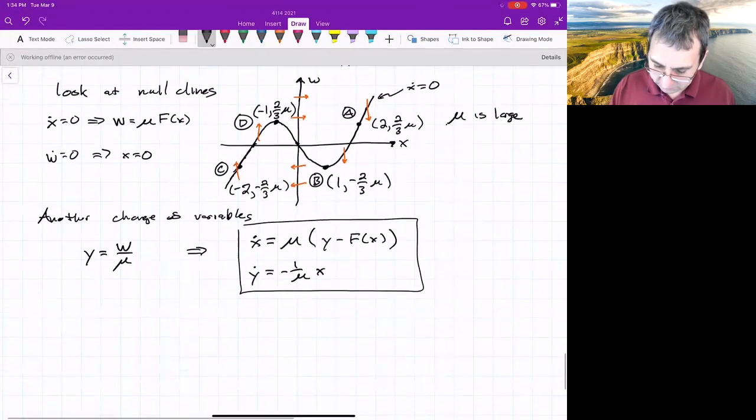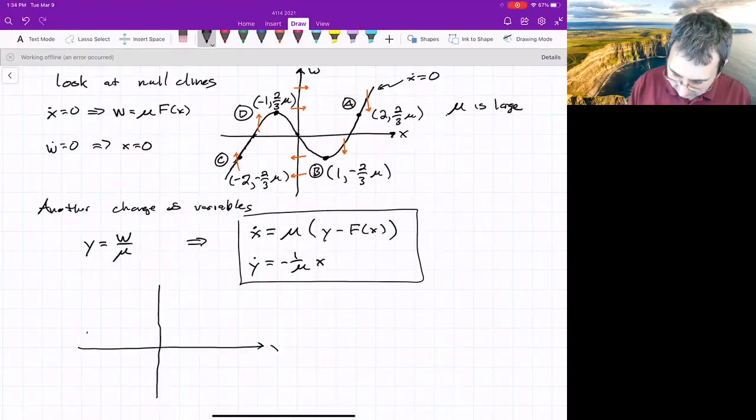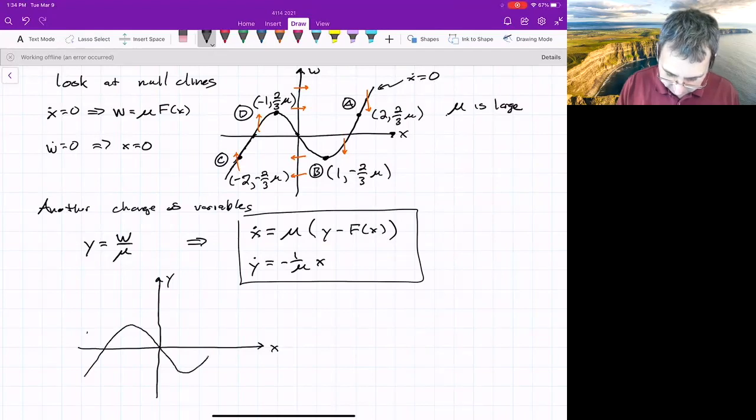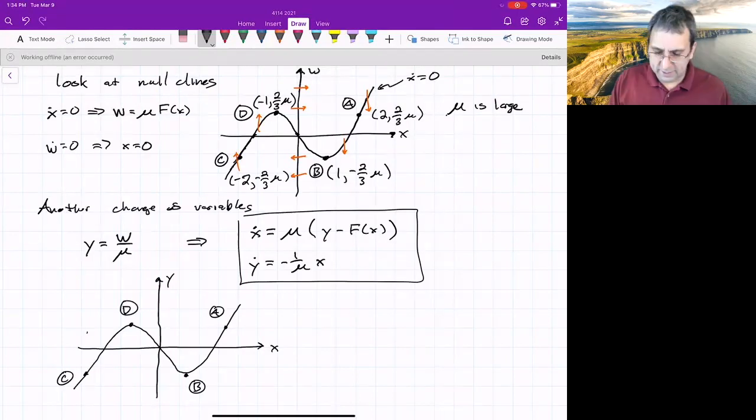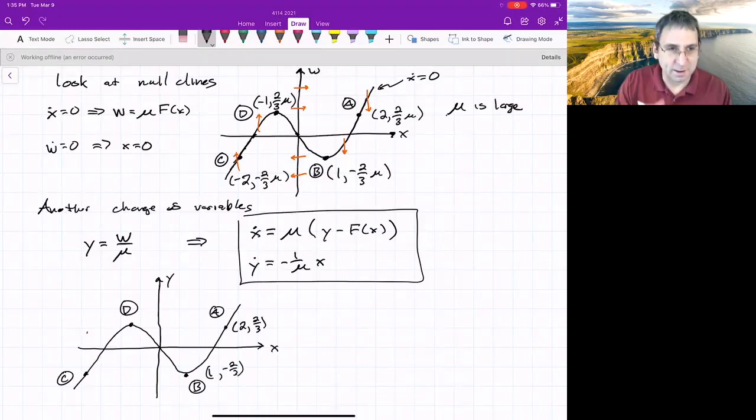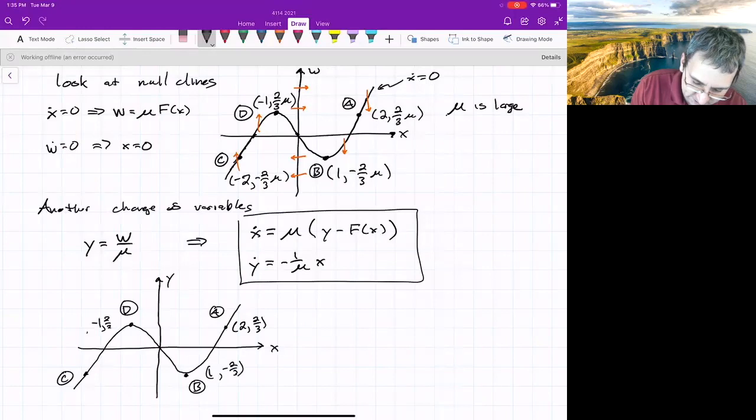And let me give you an idea of what's going on. So in these variables, x and y, y equals f of x is still going to give us that cubic looking thing. We've still got our points, special points, but I call them a, b, c, d. And now remember mu is large. Mu is very large, but now it's like the coordinates are to scale. Like this is a two and two thirds. This is one and negative two thirds. So everything's about order one. It'll aid in interpretation later. This is negative two and negative two thirds.